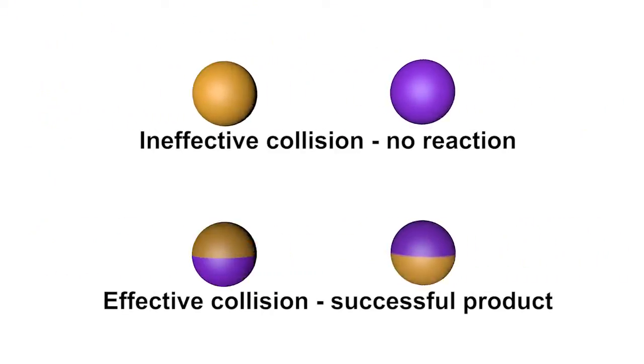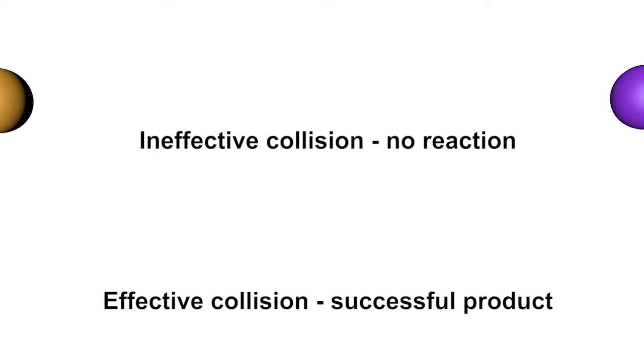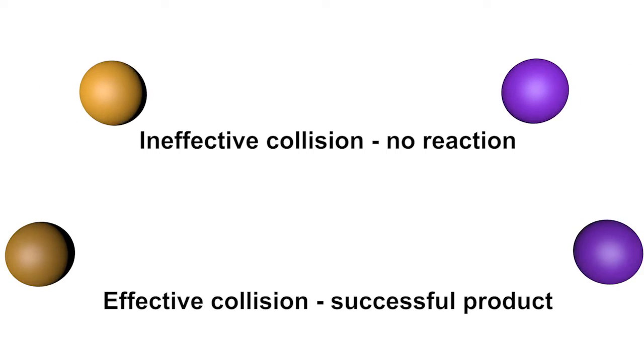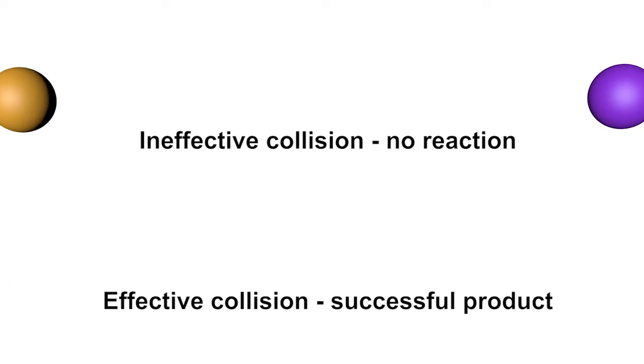How does this affect a chemical reaction? The theory states that some collisions are effective and some are ineffective. Just because particles in a reaction collide does not necessarily mean that they will react. Particles must collide with sufficient kinetic energy to form a successful product.